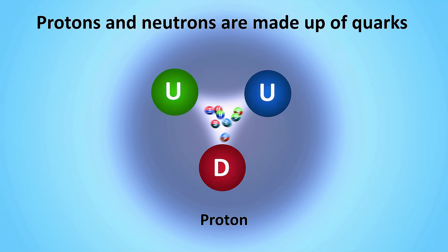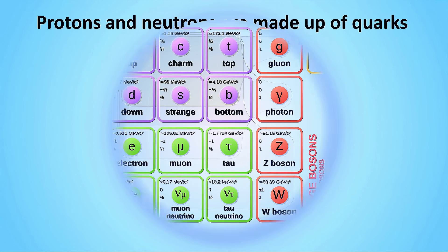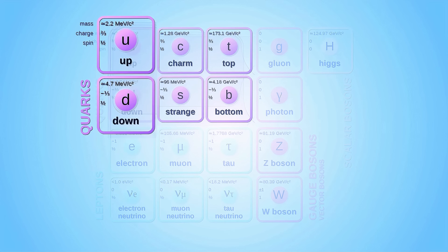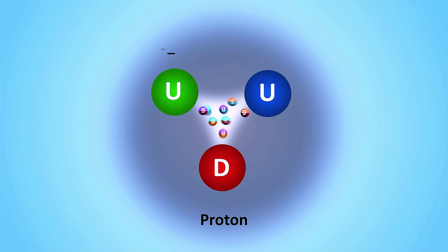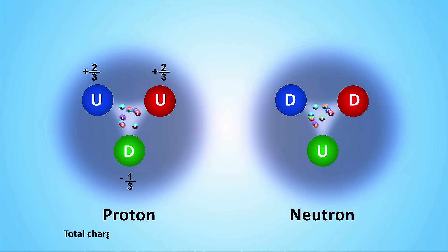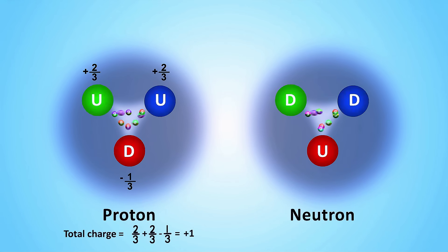Protons and neutrons themselves aren't indivisible. They're made up of even smaller particles called quarks. Quarks come in six types, or flavors. But inside protons and neutrons, you'll find only two, up quarks and down quarks. Up quarks carry a positive fractional electric charge of two-thirds, and down quarks carry a negative charge of negative one-third. But they can only combine to form particles with an integer charge. So for example, protons are made up of two up quarks and one down quark, giving them a positive charge of plus one, while neutrons consist of one up quark and two down quarks, making them electronically neutral.